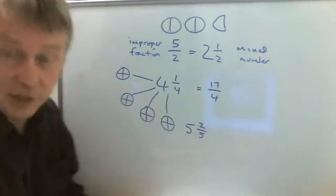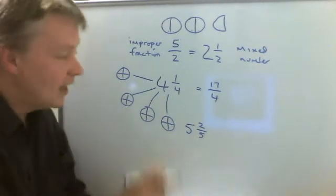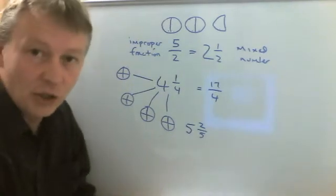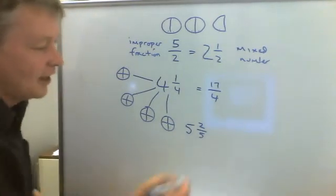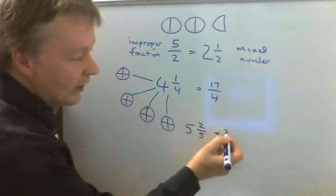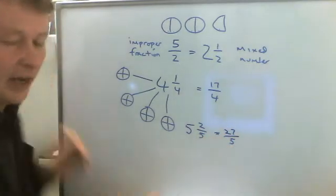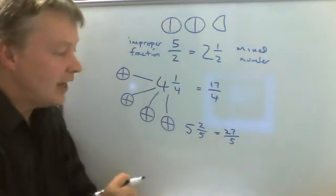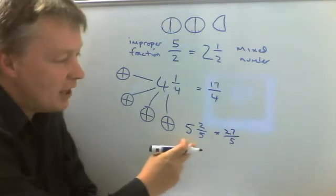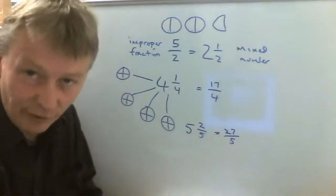So five times five is 25 and then add it to the two remaining bits of pizza which would be then 27 over five. And what we've done there is converted a mixed number to an improper fraction.